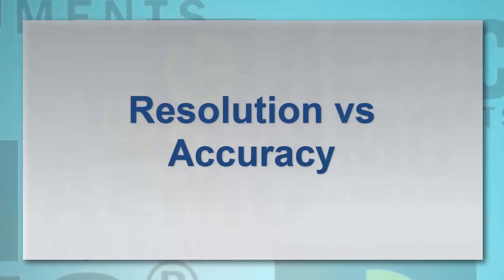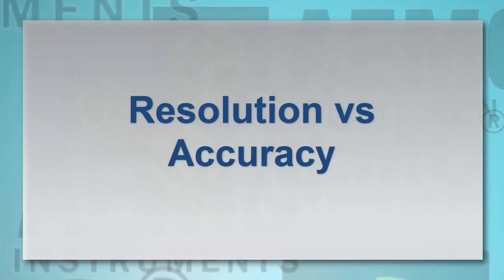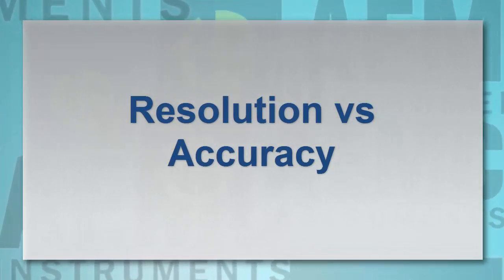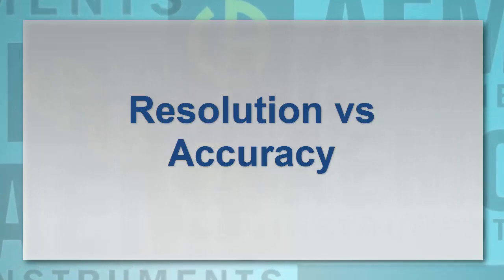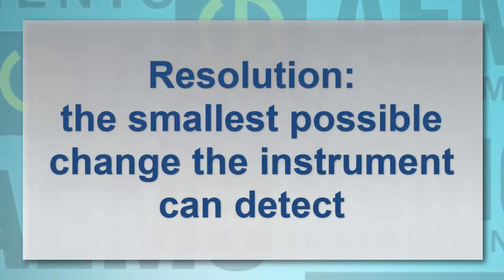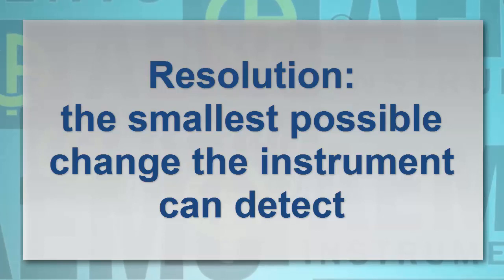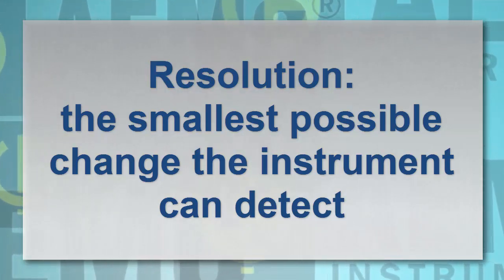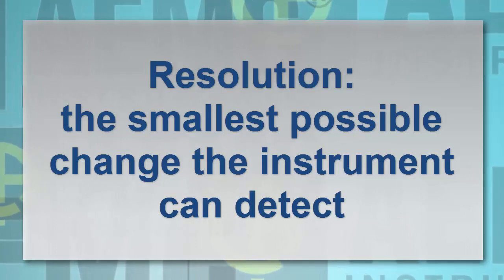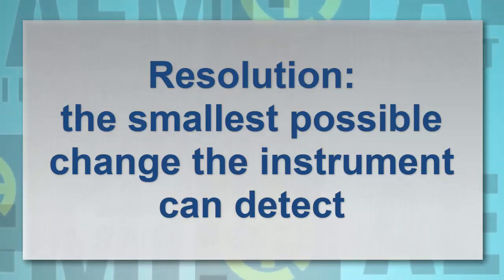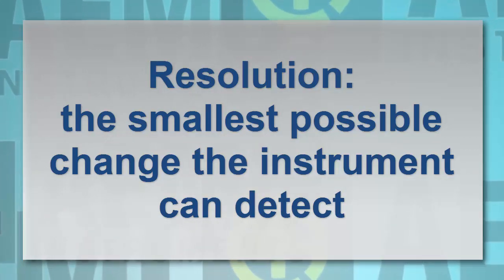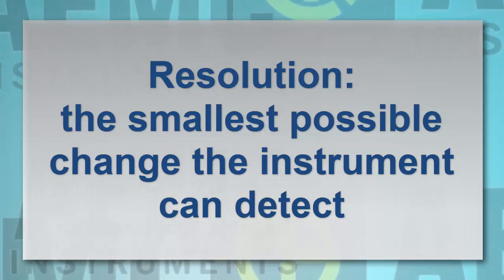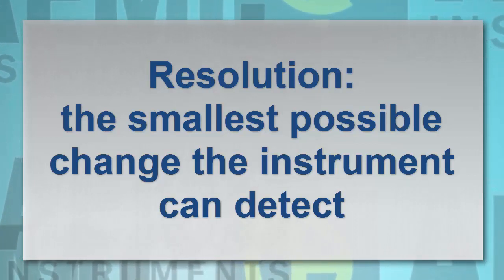Users often refer to resolution and accuracy interchangeably, but it's important to understand the distinction between these terms. Resolution defines the smallest possible measurement change the instrument can detect. Thus, a one-thousand-count digital multimeter can display a change of one-thousandth of a unit, while a ten-thousand-count instrument can detect one ten-thousandth—in other words, ten times the resolution of the thousand-count multimeter.